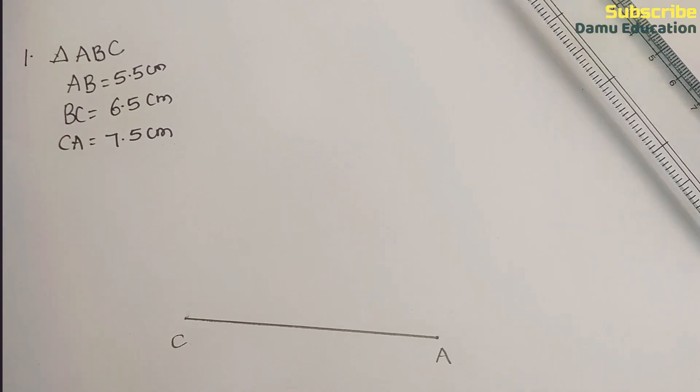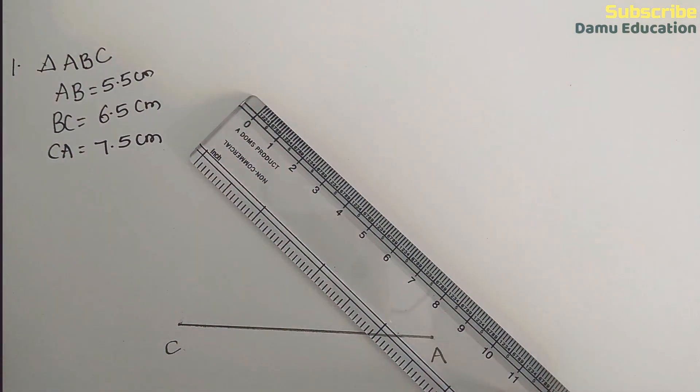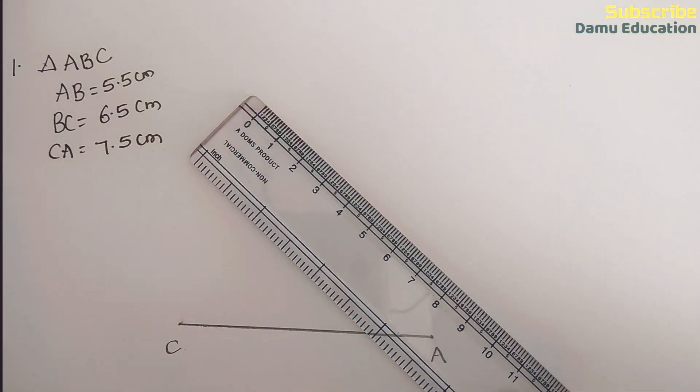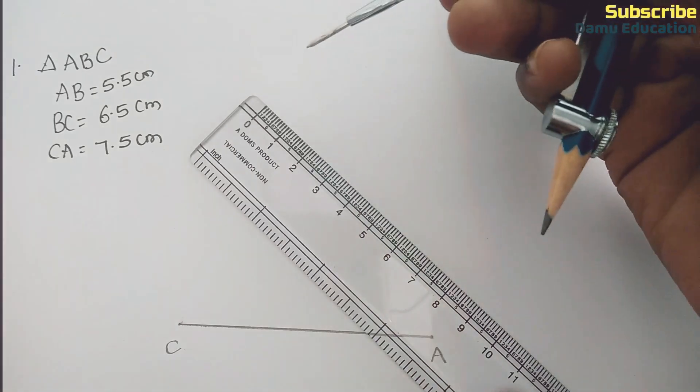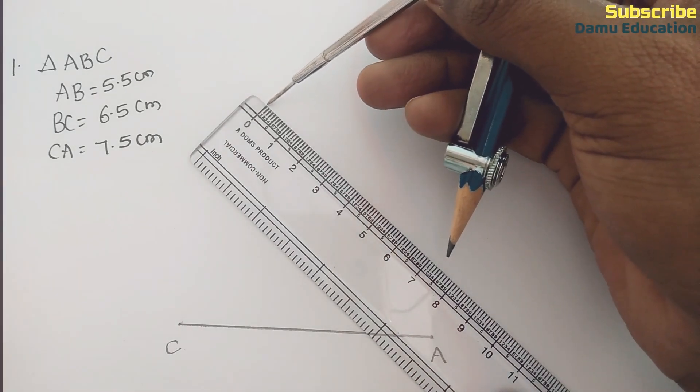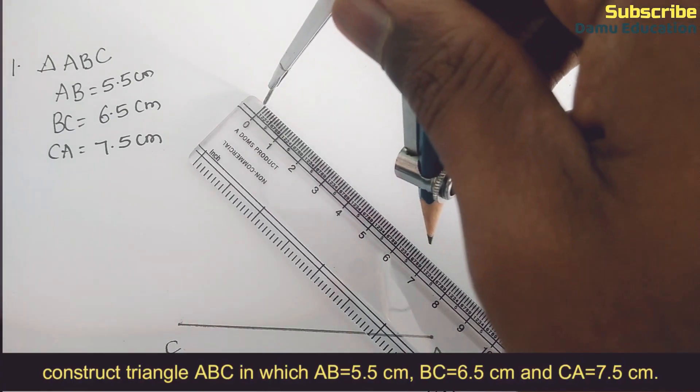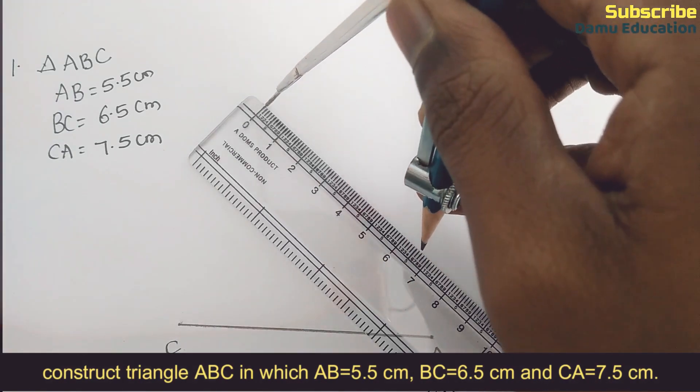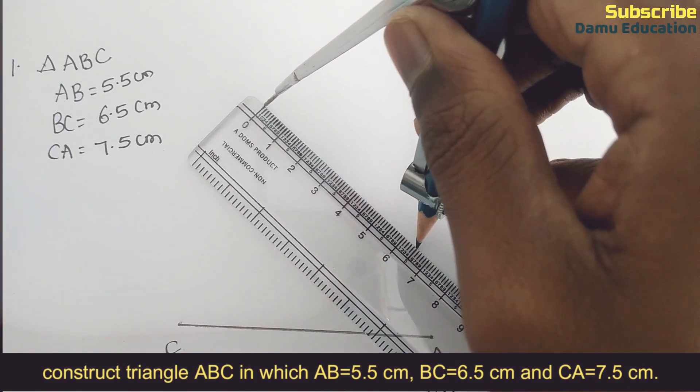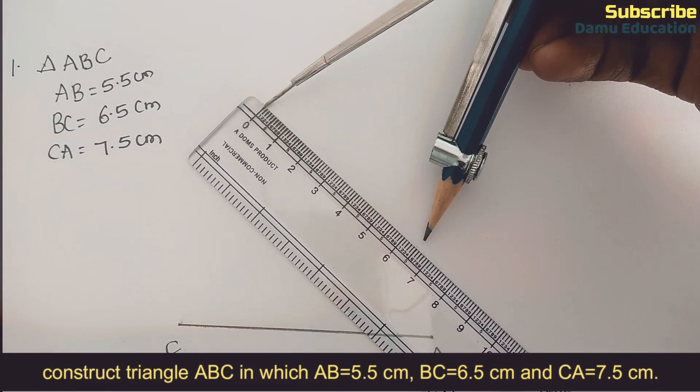To draw the arc, start from B. Since BC is 6.5 centimeters, place the compass needle at zero and elongate the pencil up to 6.5. This measurement of 6.5 will be the radius for drawing the arc.